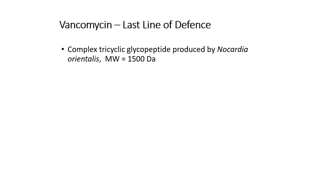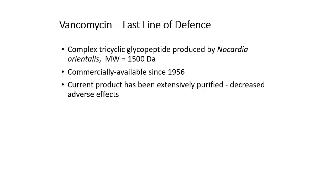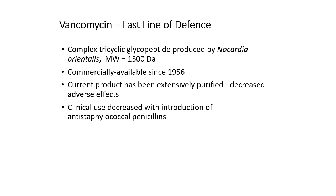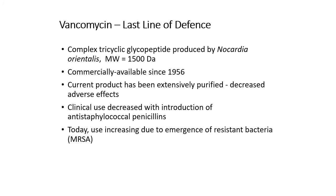Vancomycin is an example of a drug that absolutely does not obey Lipinski's rules. It has been in use since 1956 and, although it is a natural product, it is now much more pure than it used to be, giving fewer adverse effects. It was stopped being used for a long time due to the introduction of other penicillins and beta-lactams, but the emergence of beta-lactam resistant bacteria means vancomycin is now used in the clinic again. It is fairly toxic, used as a last line of defence, not ideal for everyday use. Clinicians prefer to avoid it if possible, as it is nephrotoxic and targets the kidneys.